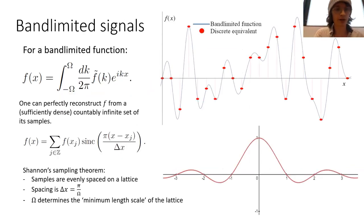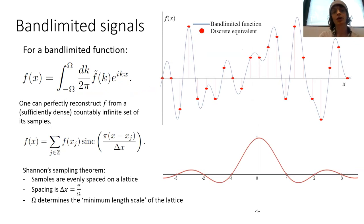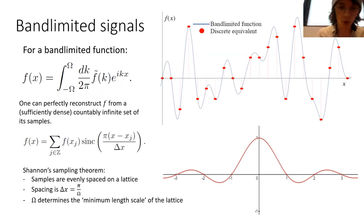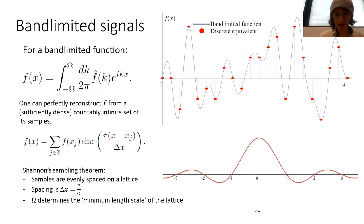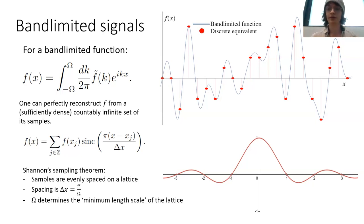For such a band-limited function, we can reconstruct the continuous function f from a countably infinite set of its samples, provided that set is sufficiently dense — from a lattice that has a small enough spacing. We can use this reconstruction formula called the Shannon sampling theorem, where we interpolate the samples using a sinc function of spacing delta x. This lattice spacing delta x is given by the UV cut-off as pi over omega, and this determines the minimum length scale of our lattice and eventually our universe.